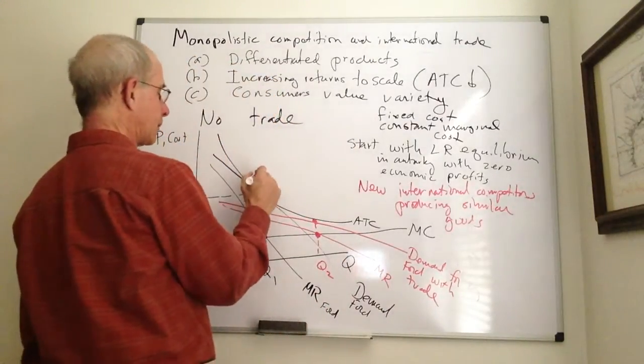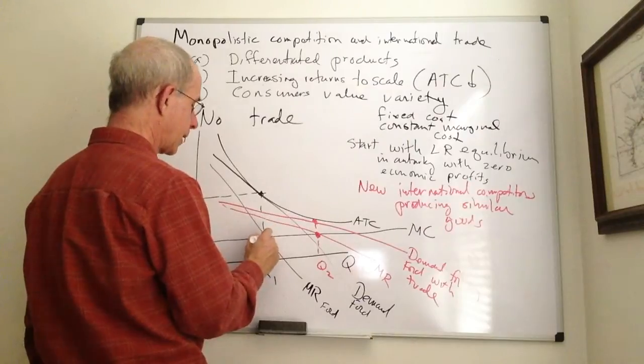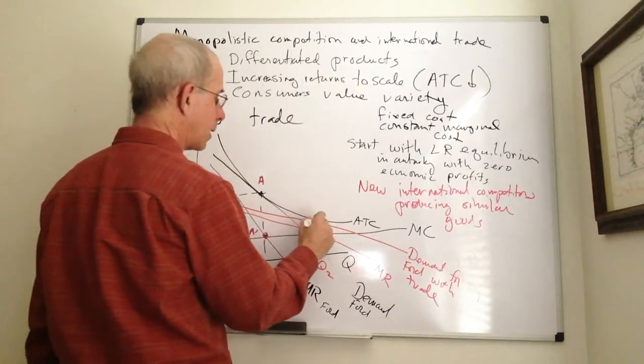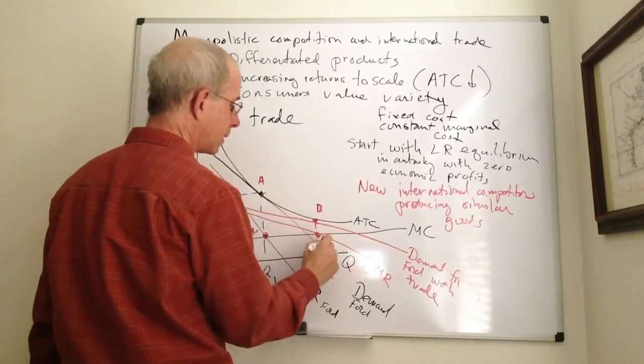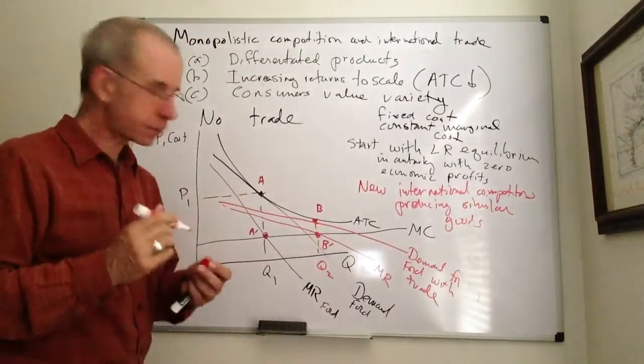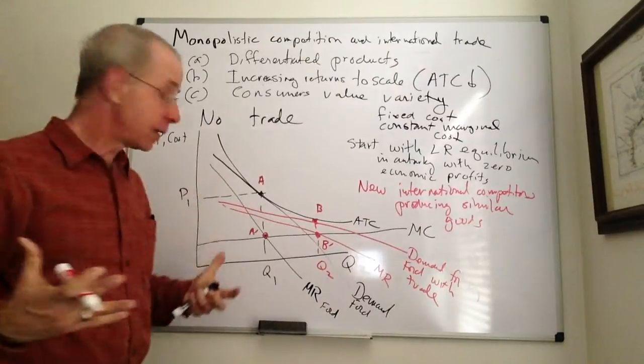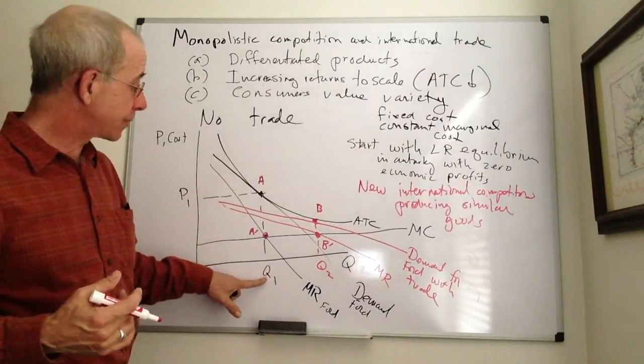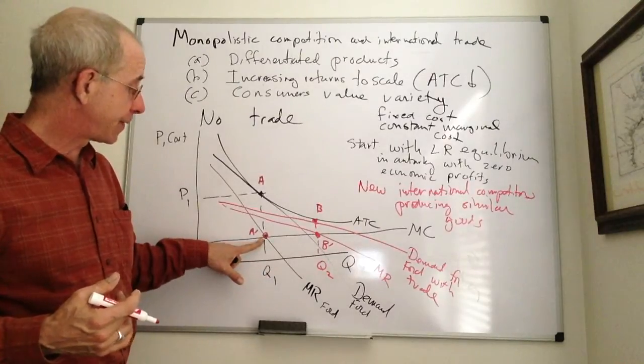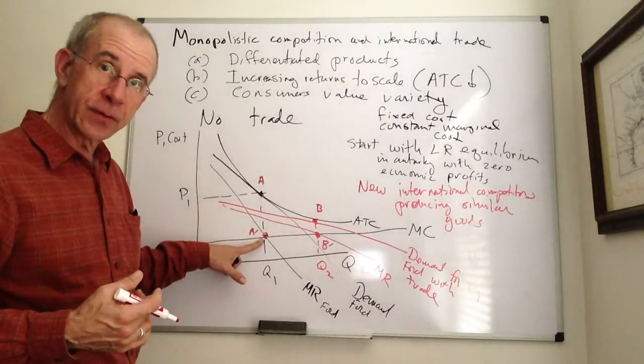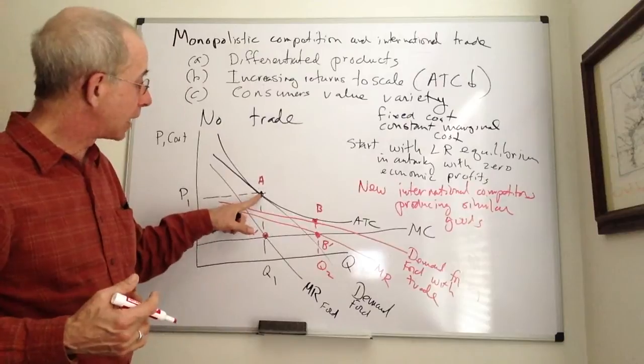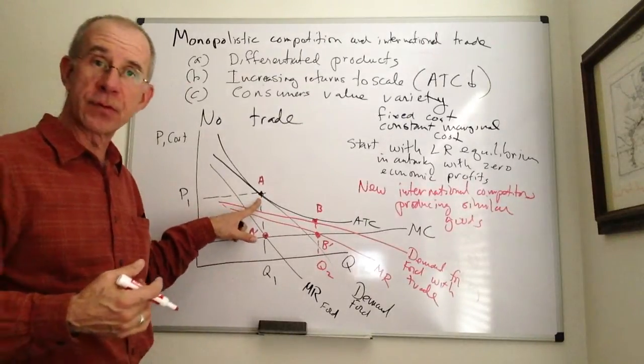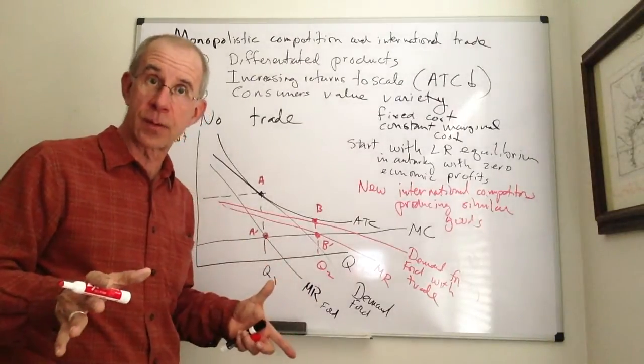and then I'm going to draw the relevant marginal revenue curve. And so, let me have some points labeled here. A, A prime, B, B prime. So, before the international competition, Q1 was being produced at this marginal revenue and a quantity such that the price equal to average total cost. So, zero economic profits in the long-run equilibrium.